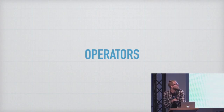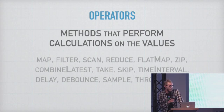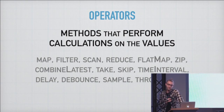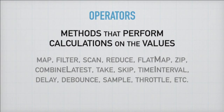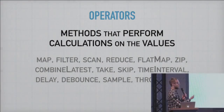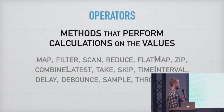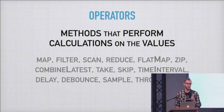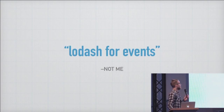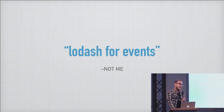Observables have operators. Operators are methods that perform calculations on values — things like map, filter, scan, reduce. If you're familiar with the array extras, lodash, or underscore, you'll be familiar with a lot of these. But observable also has ones specific to it. If you're talking about asynchronous values, you're talking about temporal operators like delay, debounce, time interval, throttle. Some people call it lodash for events — I don't call it that, but you can.